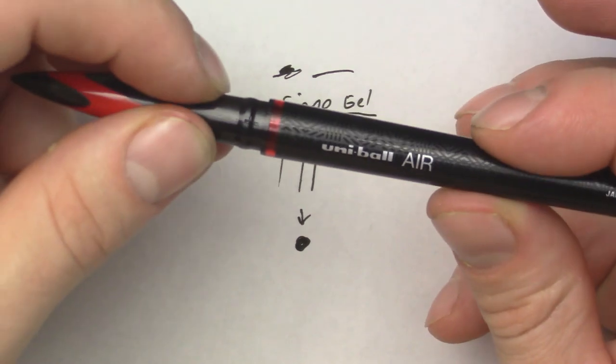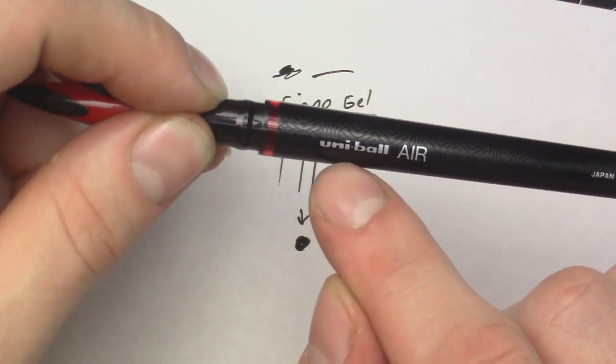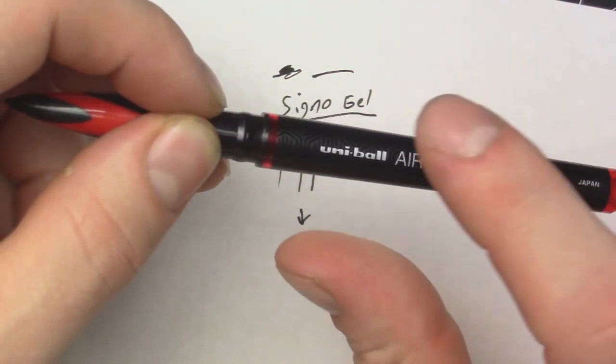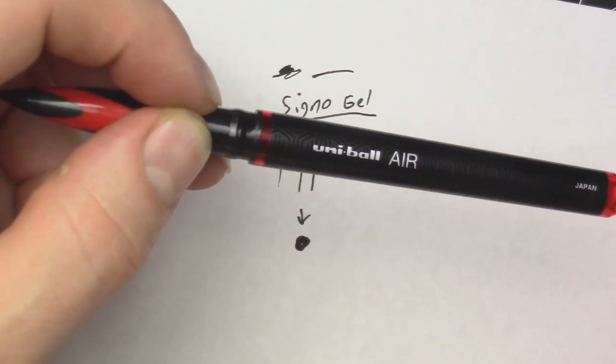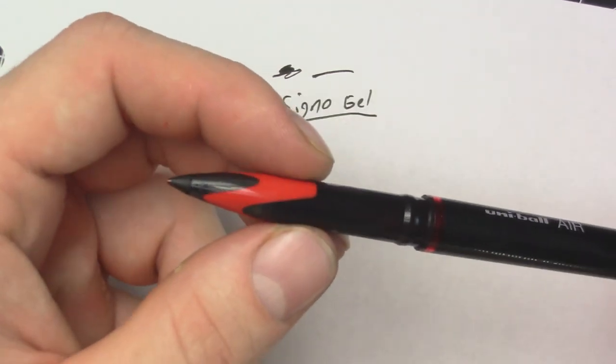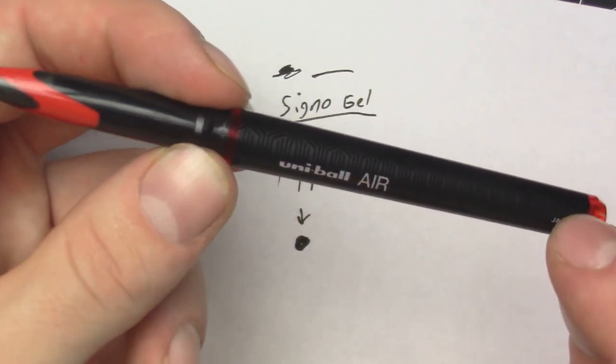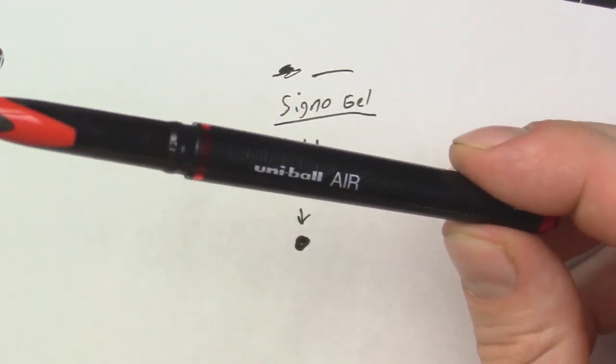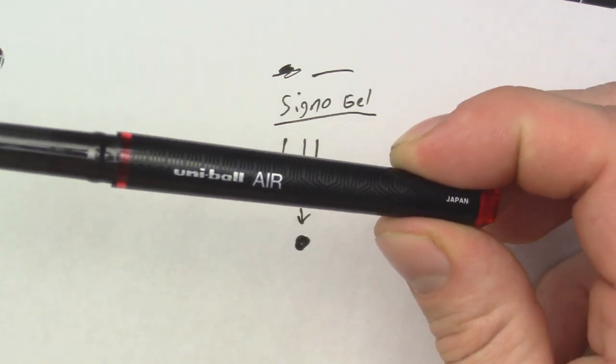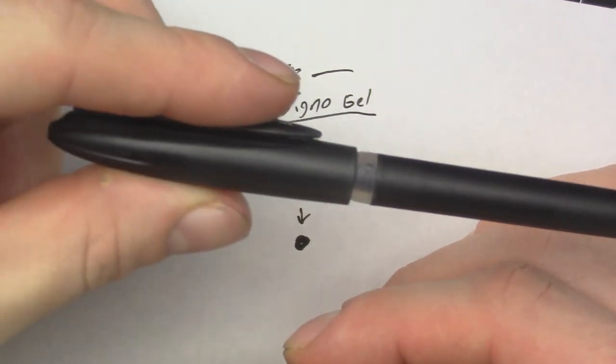At the moment I could not find a Uniball Air that I have in black, so I will be doing this test with the red ink. As you can see here, this pen has a more aesthetic look to it - a better-looking pen and it looks a lot fancier. This pen here is made in Japan, and this one is as well.